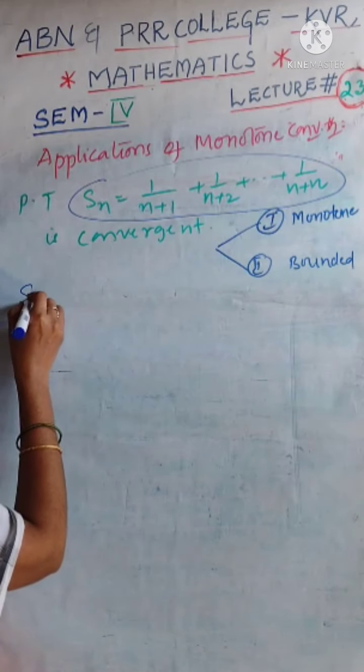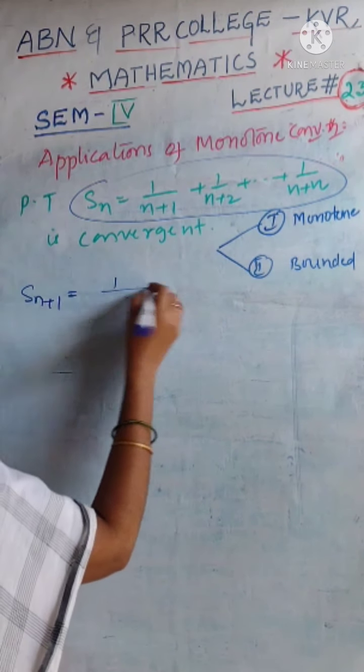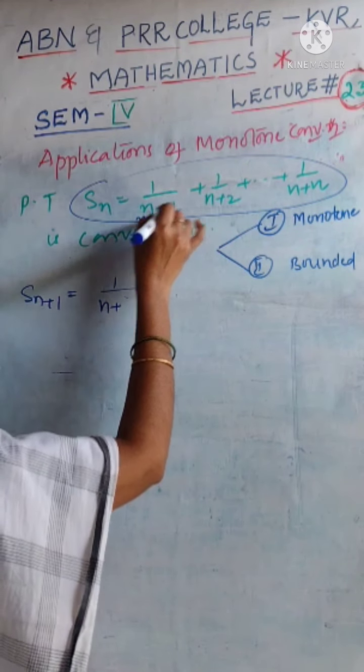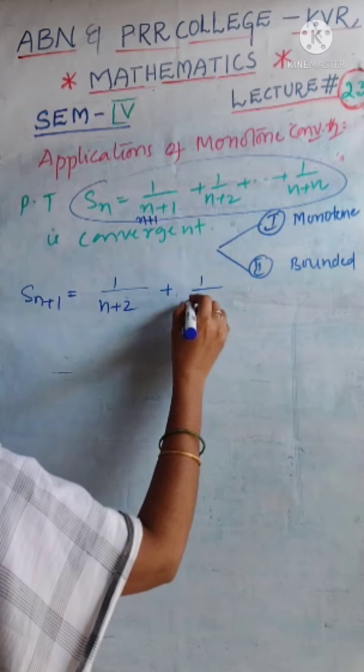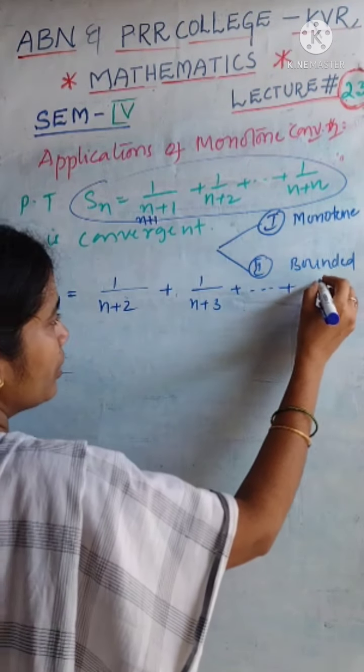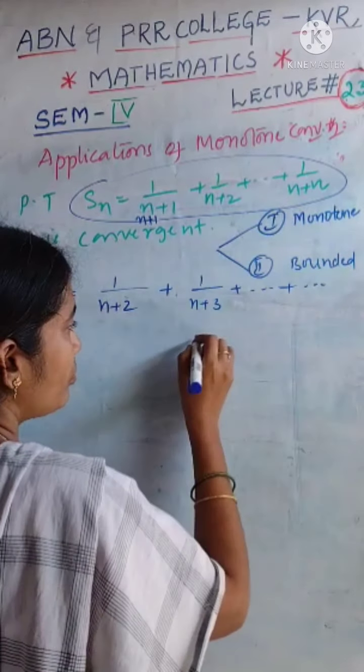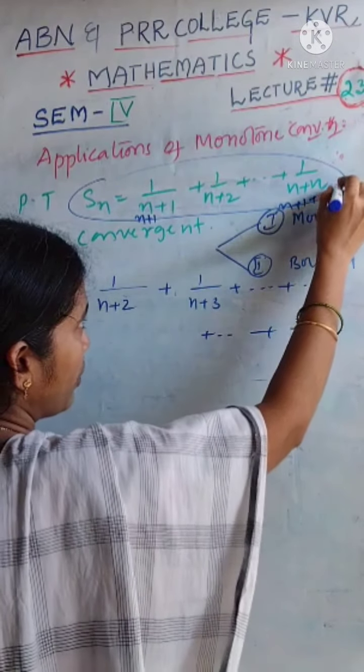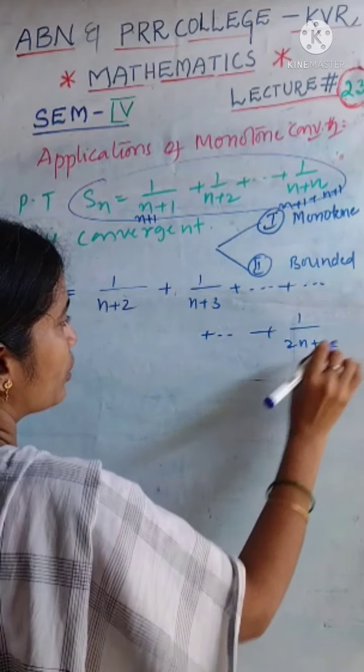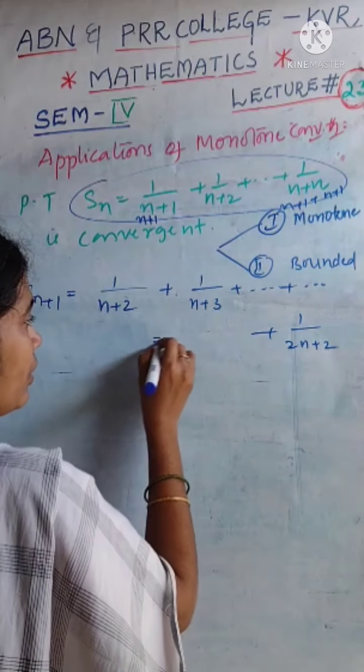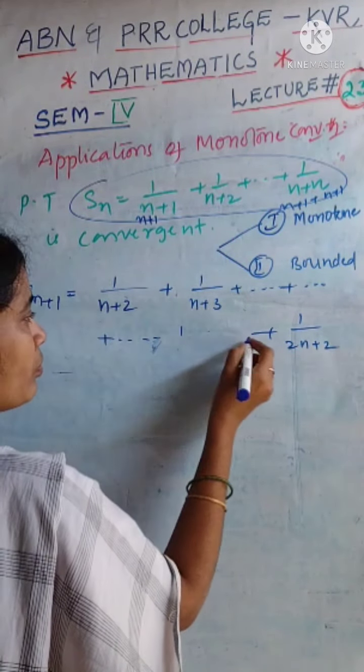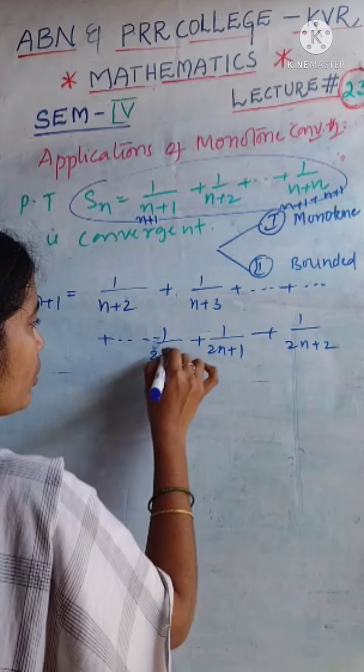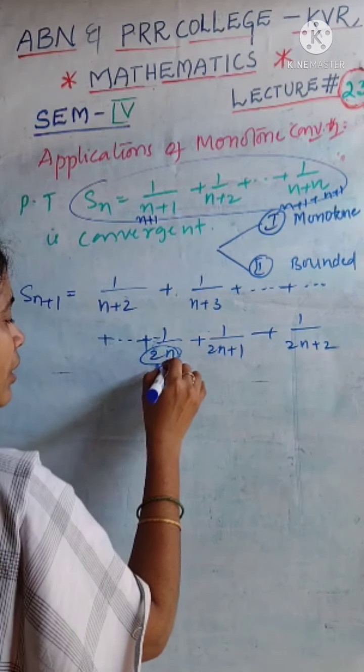Whenever Sn is like this, what is the next term of the sequence? Sn plus 1, which is equal to, by replacing n by n plus 1 in the given sequence, it is obtained as 1 by n plus 2 plus 1 by n plus 3 plus and so on. Finally, we have 1 by n plus 1 plus n plus 1, which is 2n plus 2. The before term is 1 by 2n plus 1, and the before term is 1 by 2n.